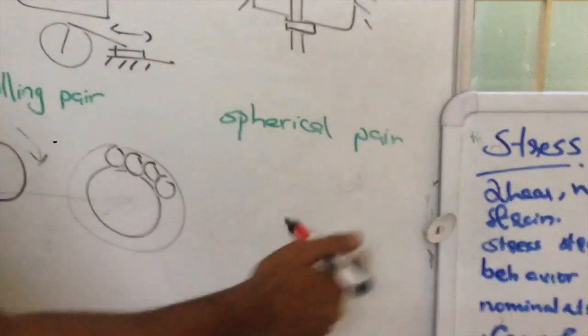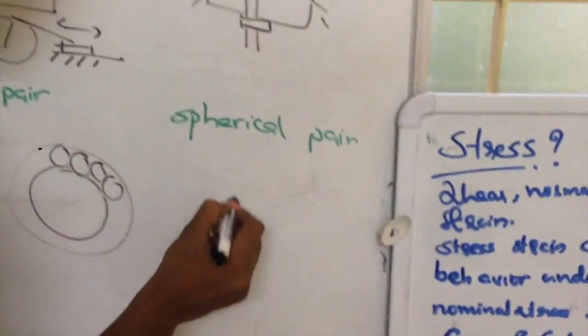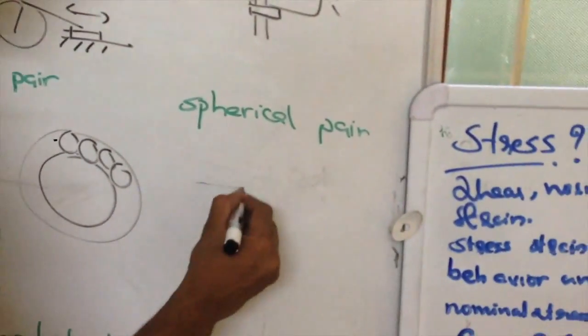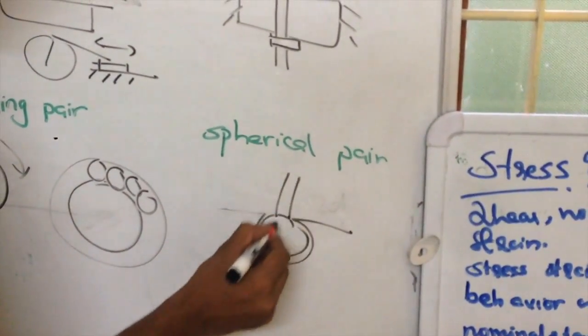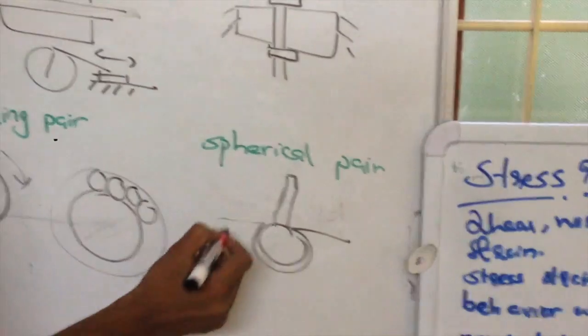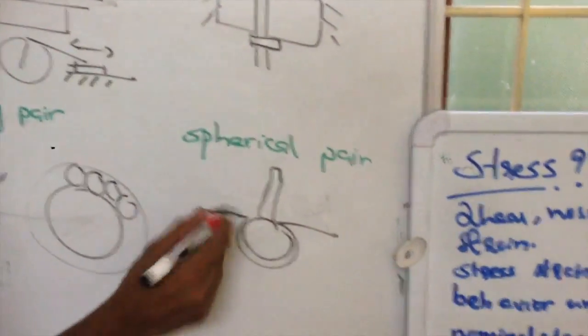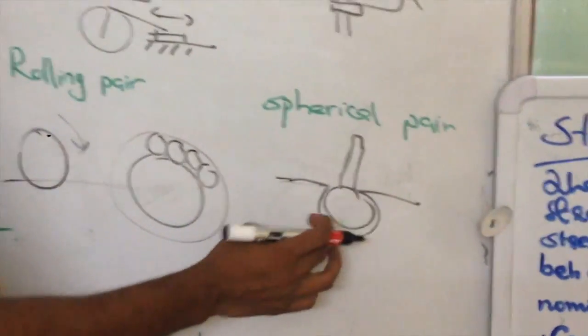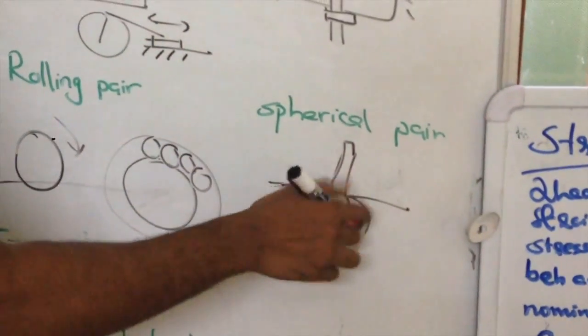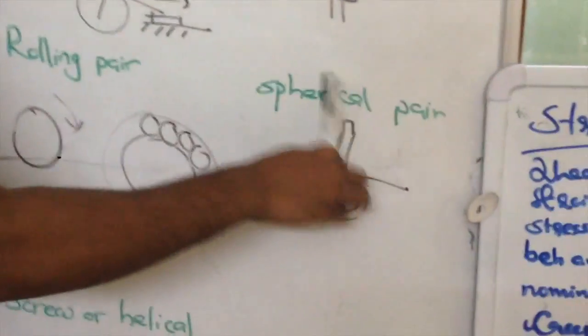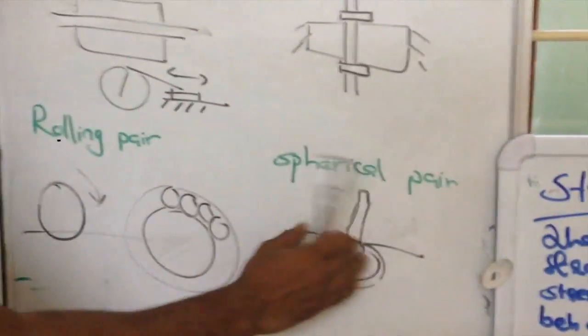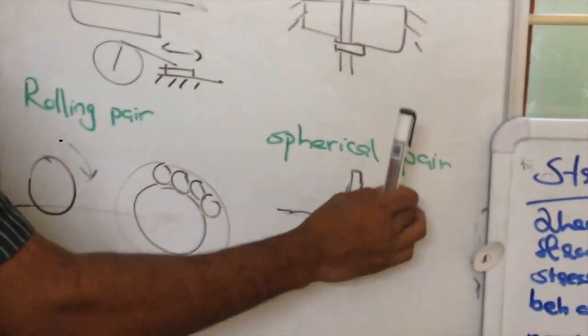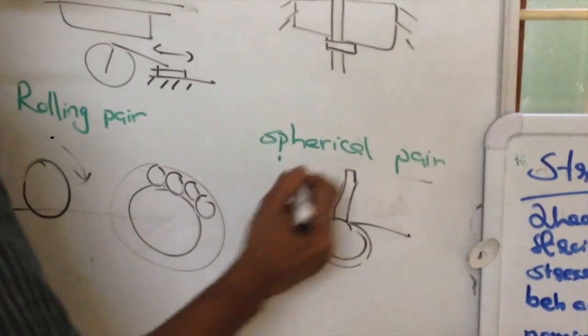Now spherical pair. Spherical pair means we know ball and socket arrangement. In ball and socket arrangement there will be a ball and we will be having a link connected like this. This is a fixed link inside which there is a ball. So this is the socket and this is the ball. This particular link can slide like this. It can swivel and that link is called spherical pair. We can see this in our hand.